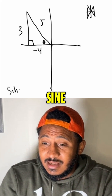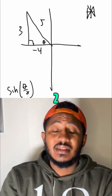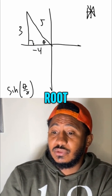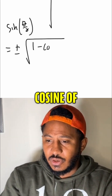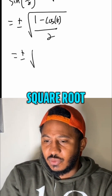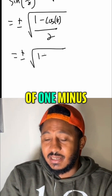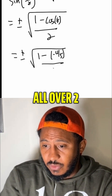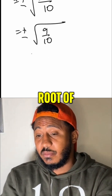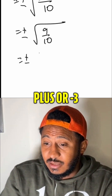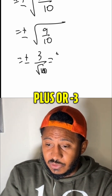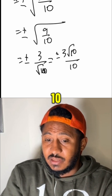This question asks us to find the sine of theta over 2. The formula says this equals plus or minus the square root of 1 minus the cosine of theta, all over 2. So that would be plus or minus the square root of 1 minus negative 4 fifths, all over 2. We simplify this and multiply each fraction by 5, take the square root of the top and bottom. So that's plus or minus 3 over root 10, or in other words, plus or minus 3 root 10 all over 10.